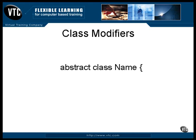If you declare a class as abstract, that means the class definition is incomplete. The class cannot be instantiated into an object because it contains one or more abstract members that cannot be created.